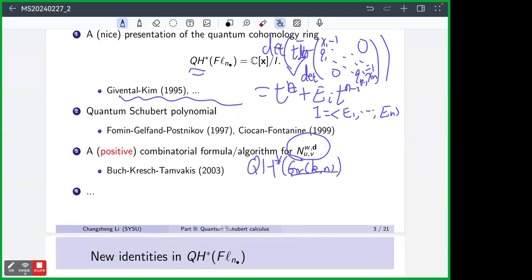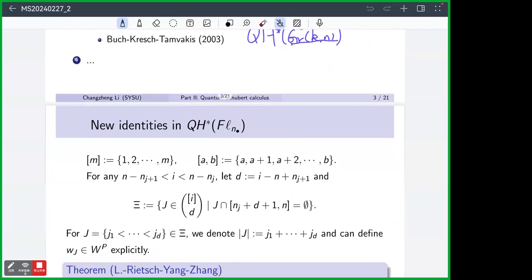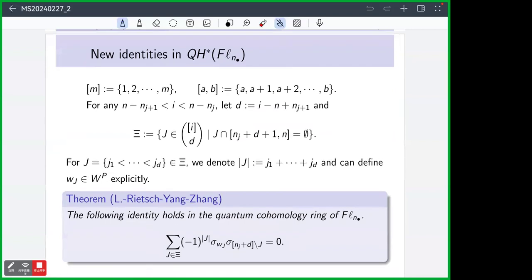Of course, for some special cases, like FL_{1,n-1}, this is a joint type, this is a bit special. But besides that, Grassmannian was the only case that we know. This is thanks to the quantum to classical principle, proved by Anderson, Griffeth, and Tamvakis.